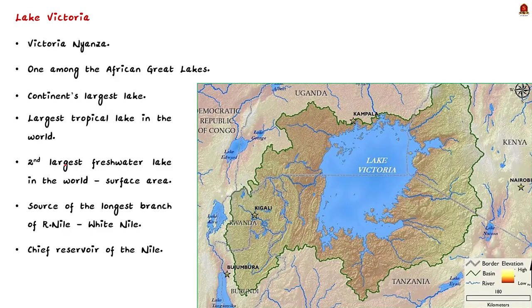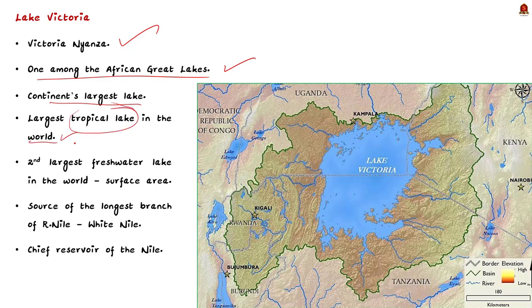Lake Victoria is also known as Victoria Nyanza. It is one among the African Great Lakes. It is Africa's biggest lake and also the largest tropical lake in the world. In terms of surface area, it is the second largest freshwater lake in the world. Lake Victoria is also well known as the source of the longest branch of the Nile River, that is the White Nile.